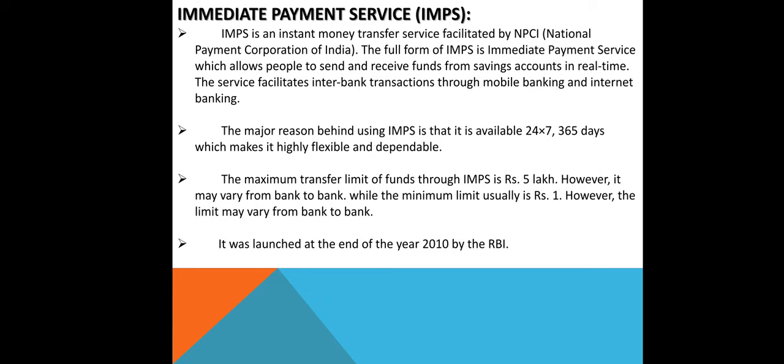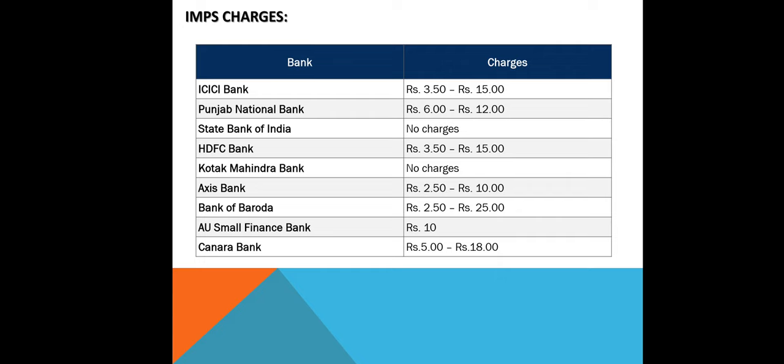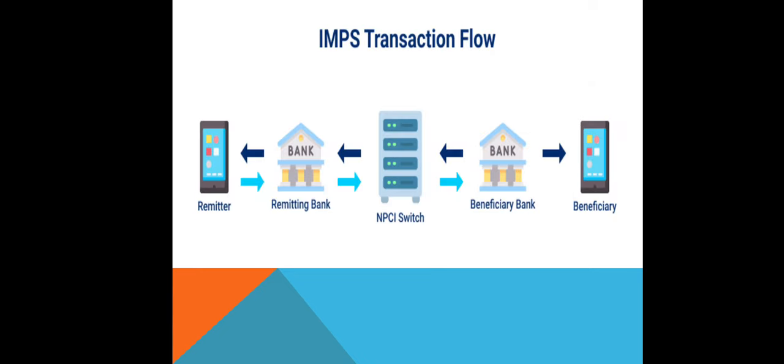The maximum transfer limit through IMPS is 5 lakhs, though it may vary from bank to bank, while the minimum limit is usually rupees 1. IMPS was launched at the end of 2010 by the RBI. The slide shows the IMPS charges made by different banks, as well as the IMPS transaction flow — from remitter to remitting bank, through the NPCI switch, to the beneficiary bank and ultimately the beneficiary.